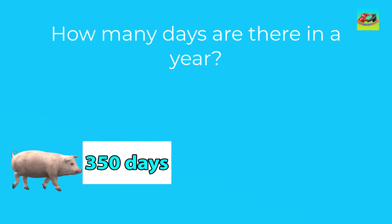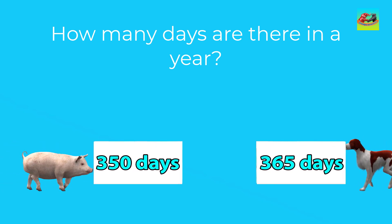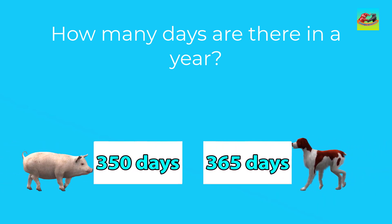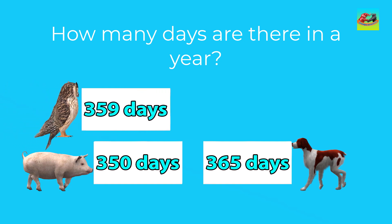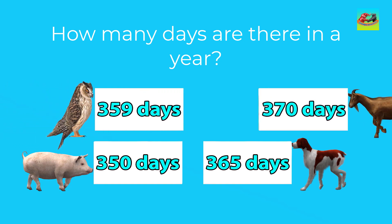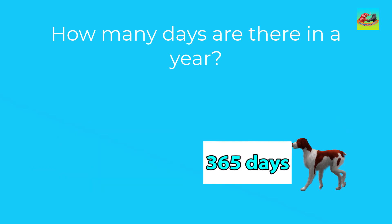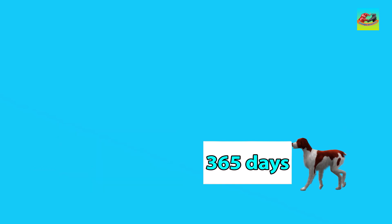How many days are there in a year? The correct answer is three hundred sixty-five days. There are three hundred sixty-five days in a year.